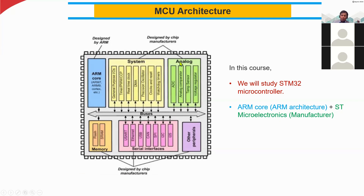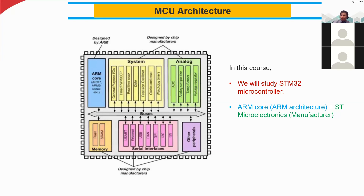For example, we have the system block and the analog block, which processes analog signals. In the old days we had separate analog ICs and digital ICs, but nowadays we have mixed signal ICs because we are putting everything together. We have analog ICs and digital ICs inside this single microcontroller chip, along with memories, interfaces, and so on — everything is inside a single chip, which is why we call it a computer on chip, or microcomputer.